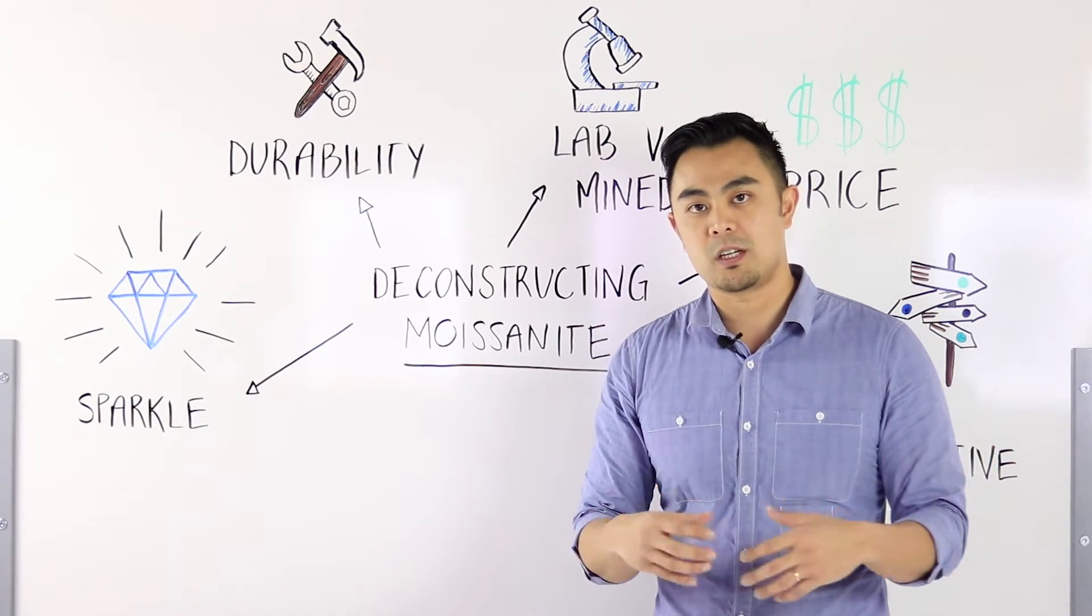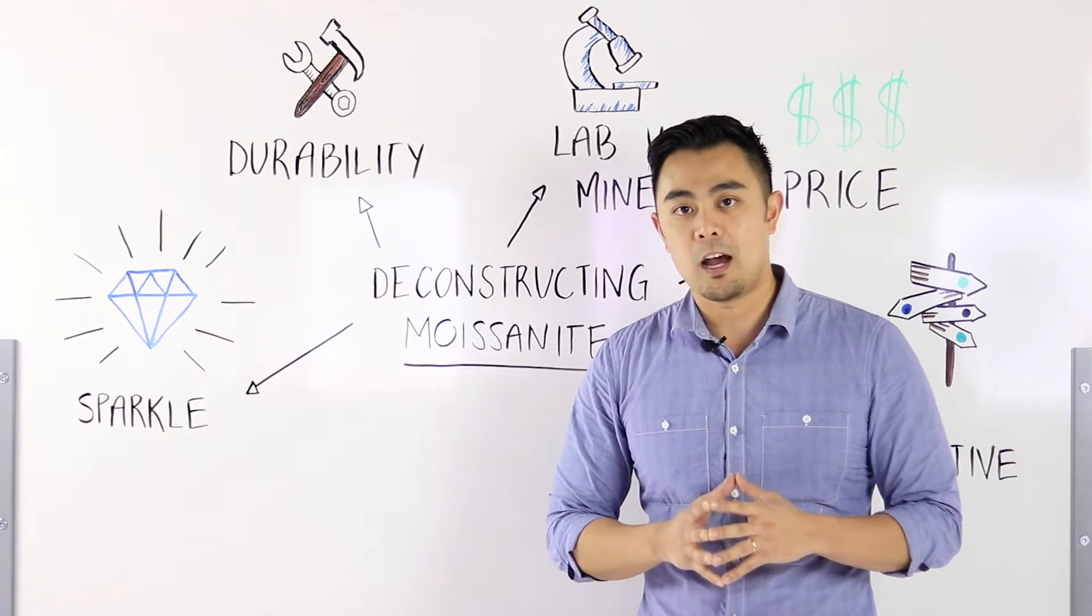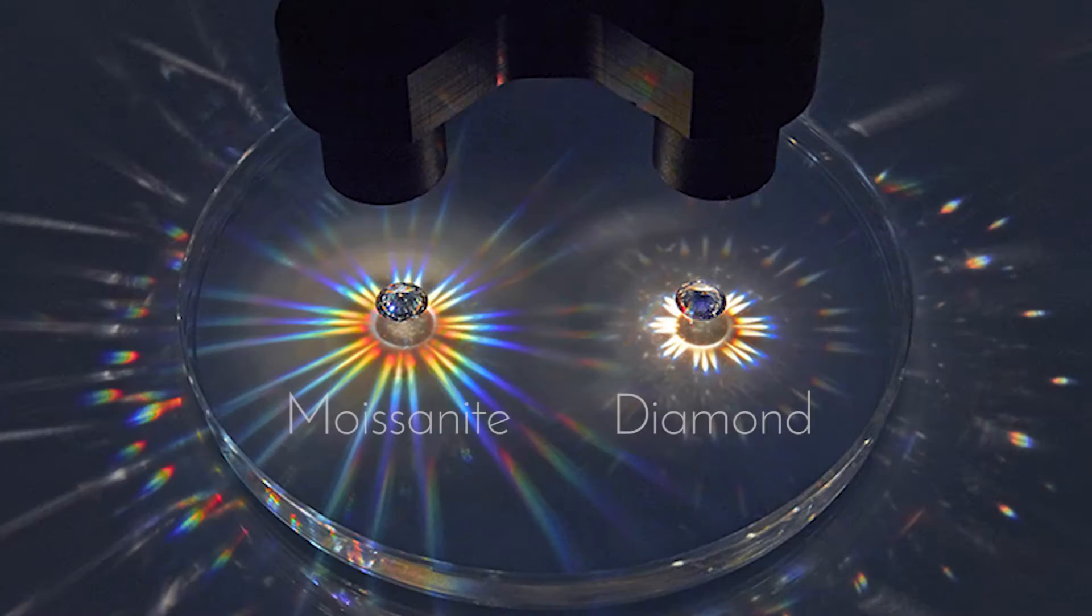That's basically the sparkle when people are talking about the fire and brilliance. Now when it comes to diamond compared to moissanite, moissanite actually has a higher refractive index and therefore has a higher sparkle.